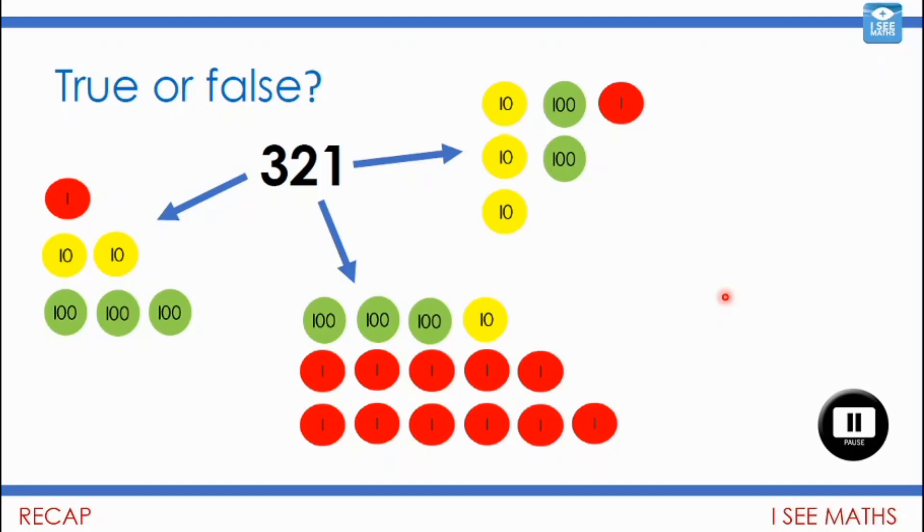And when you're ready, let's unpick them. So here we've got three hundreds, two tens and one. So yeah, 321. What about here? No, this one is 231.